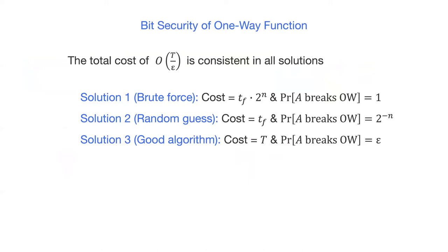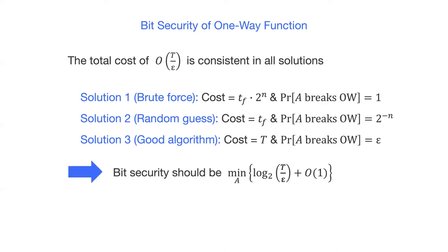We have seen three solutions to estimate the cost of breaking one-wayness. We notice that the cost of order t/epsilon is consistent across all solutions. In the brute force search, the cost is t_f · 2^n and epsilon = 1. When we use random guessing, the cost is just t_f and epsilon = 2^{-n}. So, based on this observation, the bit security should be defined as the minimum value of log base 2 of t/epsilon.